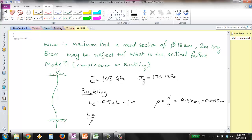That means we can now determine our slenderness ratio, which will be equal to our effective length of 1 divided by 0.0045, which gives 222.2.